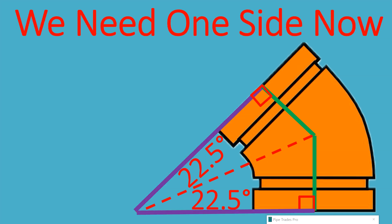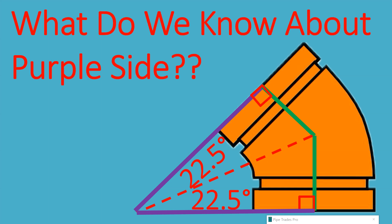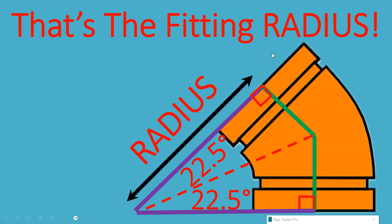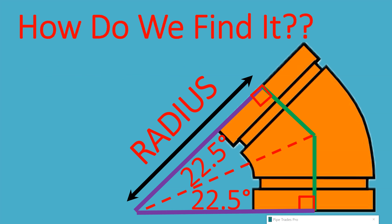So now that we have one angle, we need one side now. So what do we know about the purple side? You can see here the purple side. Okay, that's the fitting radius. Okay, the purple side is the fitting radius. How are we going to find it? Well, we don't know it, but we've got to find it.